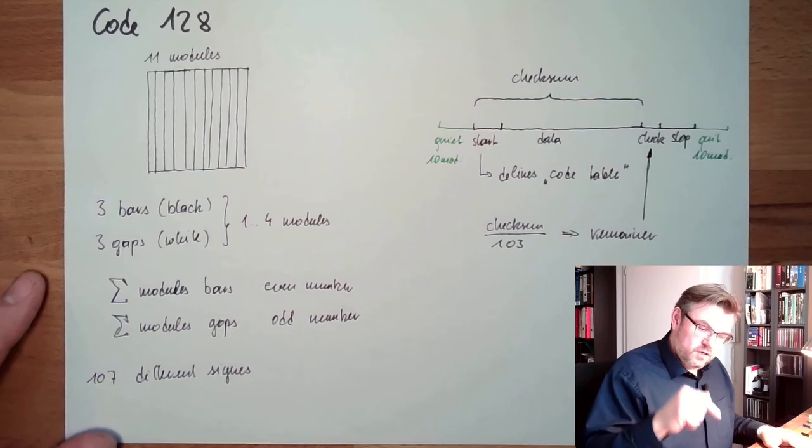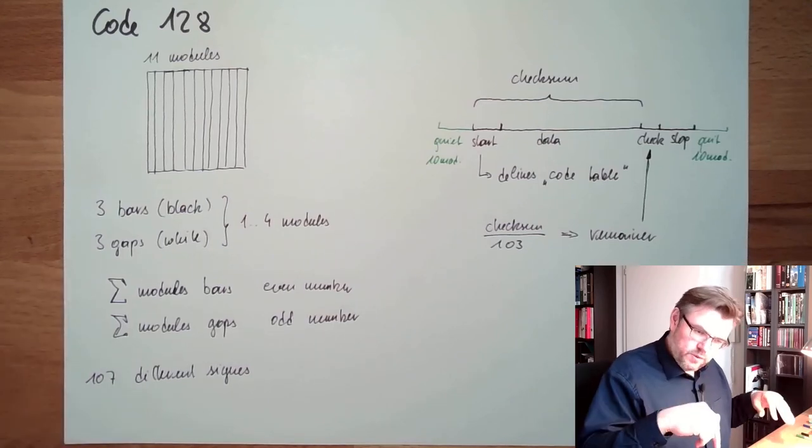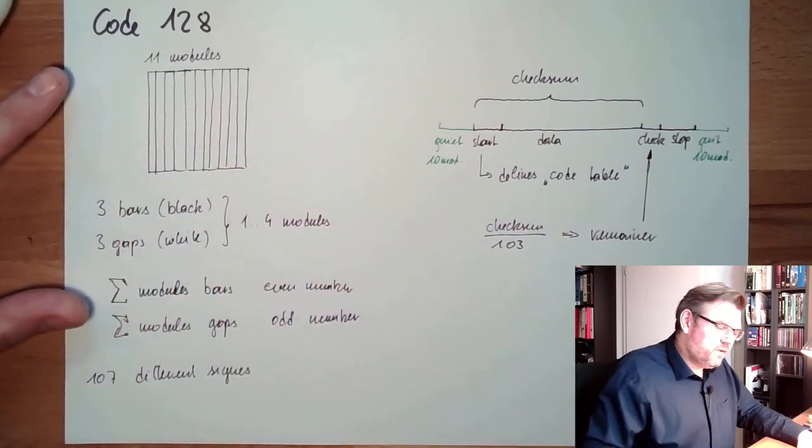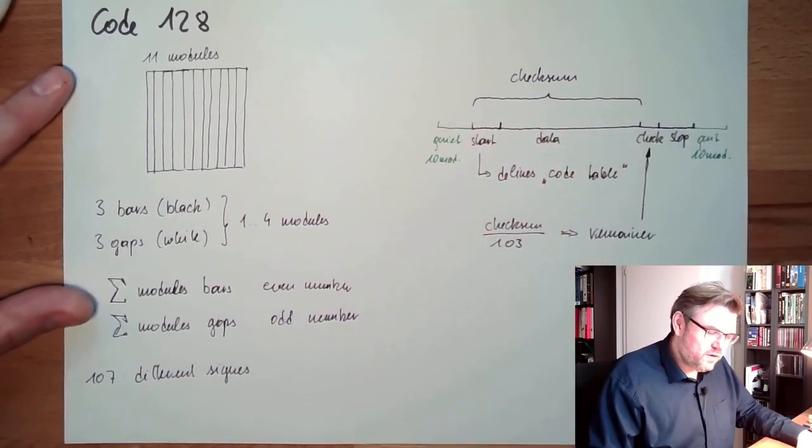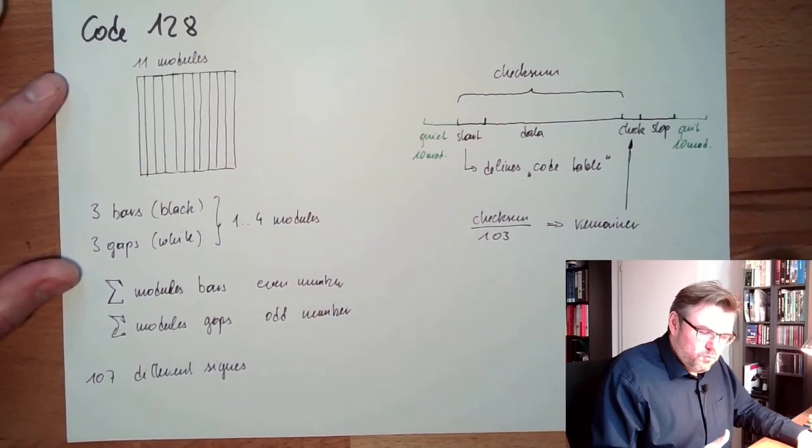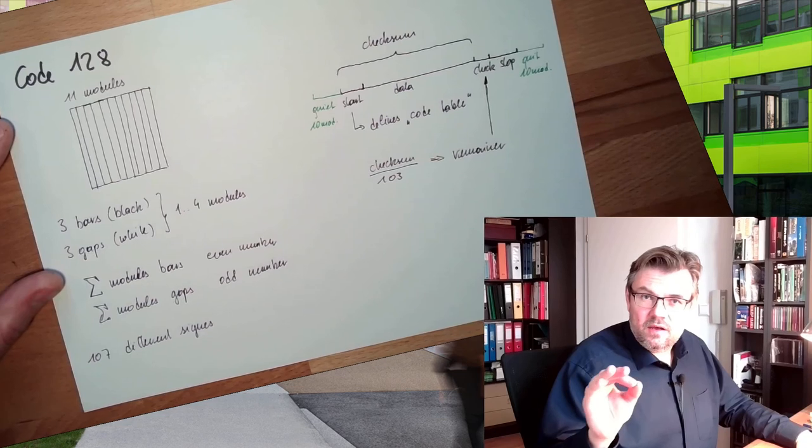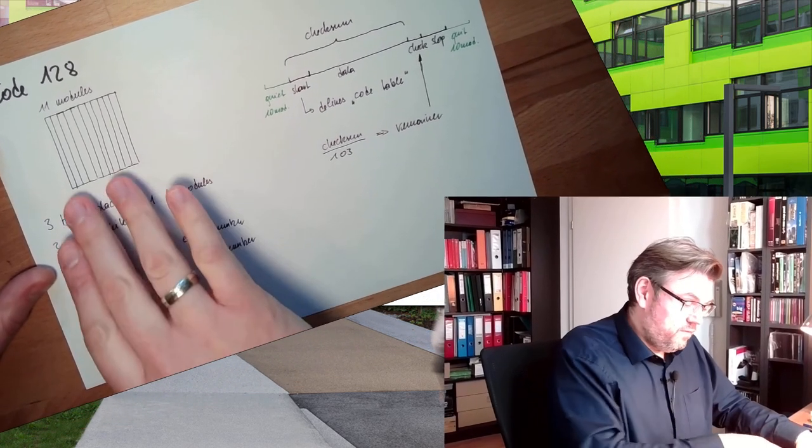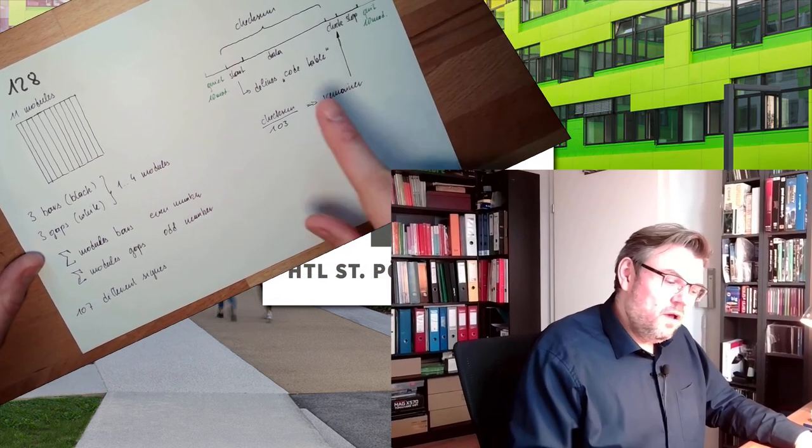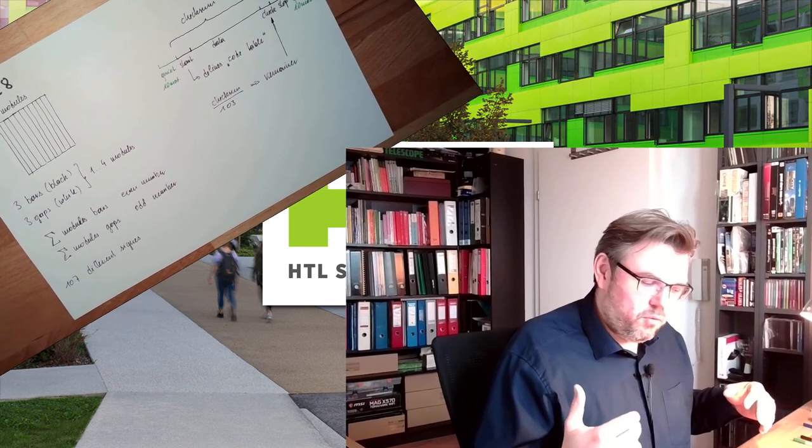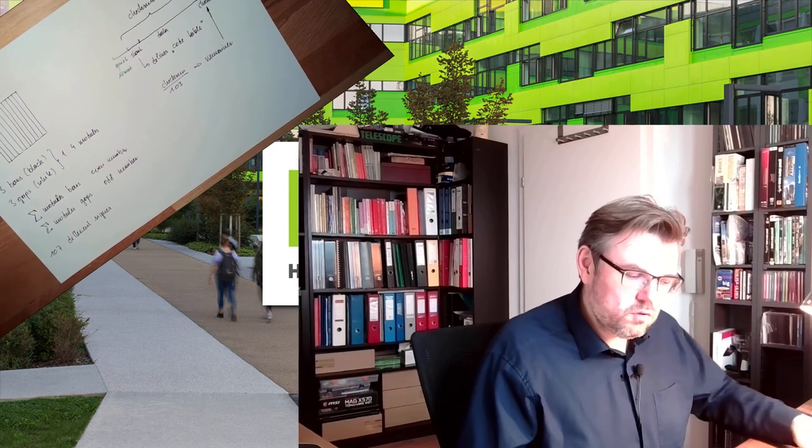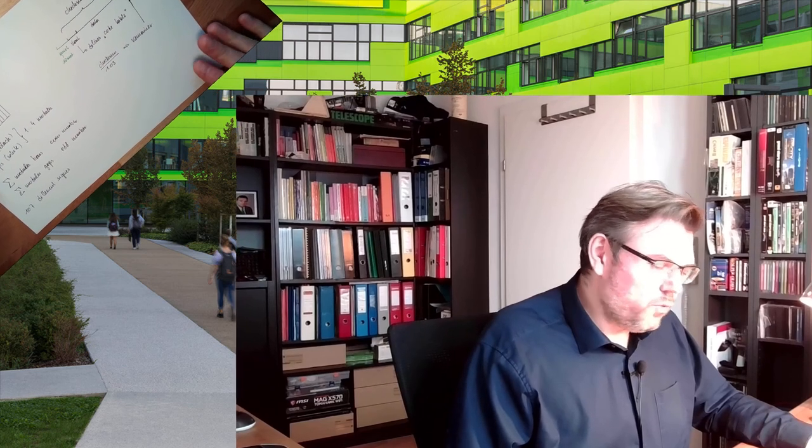I will attach a file to the video. You can download it. Should be the link in the description of the video about the three different code pages, and there's also the shift codes and so on inserted there. Then you know how this Code 128 is built. Like I said, it needs a little more accuracy in reading and printing because we have four different widths of bars and gaps. However, it's self-checking, and I have a much higher number of different possible elements I can use. So I can code more complex things with this. And Code 128 is replacing Code 3 of 9 pretty much.